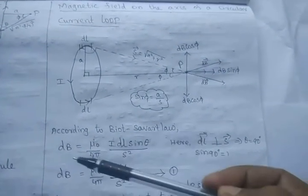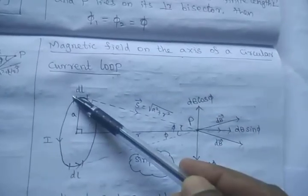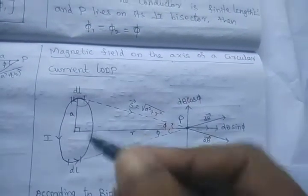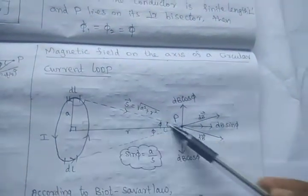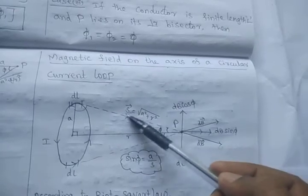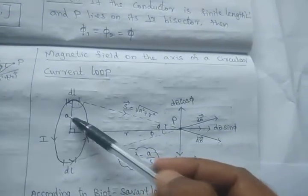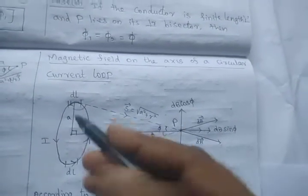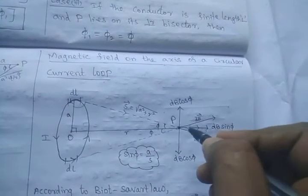According to Biot-Savart law, dB is equal to (μ₀/4π) × I dl sinθ / S². Here dl is a small elemental length, the current I is flowing in this direction, and the distance from dl to point P is taken as S. The value of S is √(A² + R²), where A is the radius of the circle and R is the distance between the center of the coil and point P at which the magnetic field is to be determined.